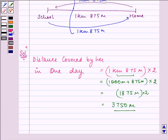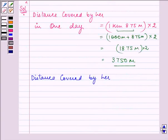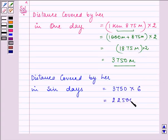Then we can easily find out the distance covered by her in 6 days by simply multiplying what she covers every day. And to avoid repeating addition 6 times, we will multiply it by 6 and we will get the answer as 22500 meters, or to be converted in kilometers, we have 22 kilometers 500 meters.